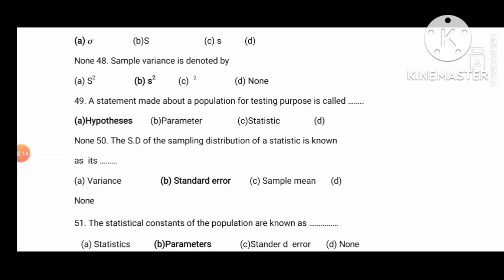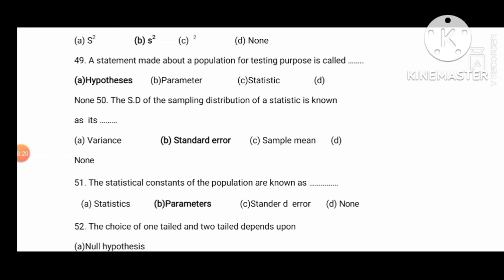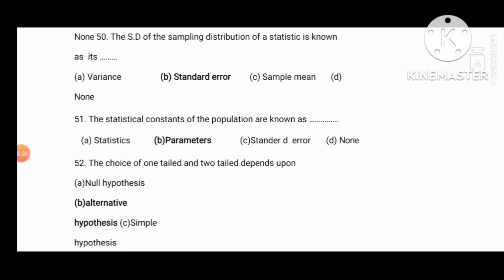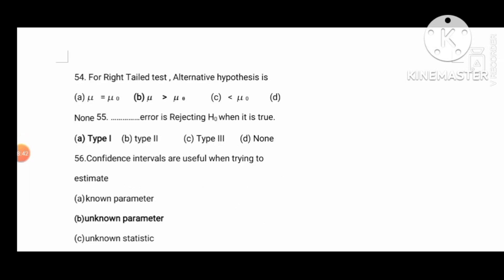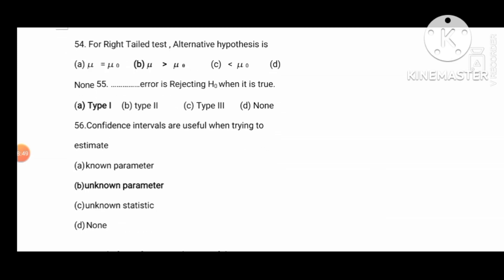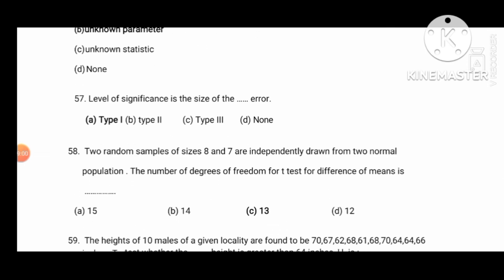The statement made about the population for testing purposes is called the hypothesis. The sampling distribution of a statistic is known as the standard error. The statistical constants of the population are known as parameters. The choice of one-tailed and two-tailed test depends upon the alternative hypothesis. The formula used to test the null hypothesis is defined as the test statistic. The level of significance is the size of the Type 1 error.